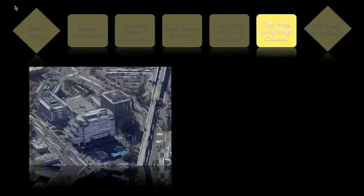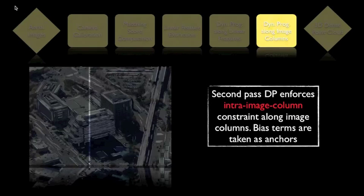The bias terms generated in the first-pass are then taken into account in the second-pass dynamic programming, which is performed along aligned image columns to enforce our intra-image column constraint, producing a dense 3D point cloud as the output.